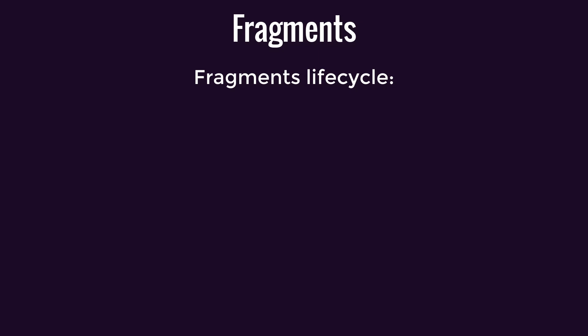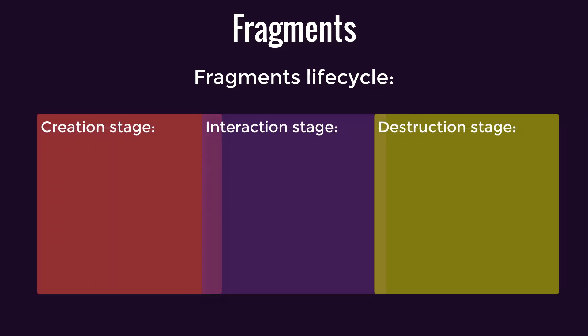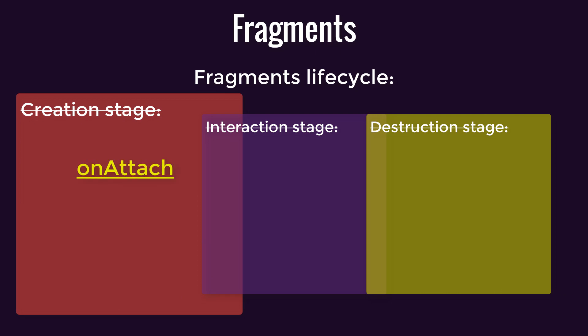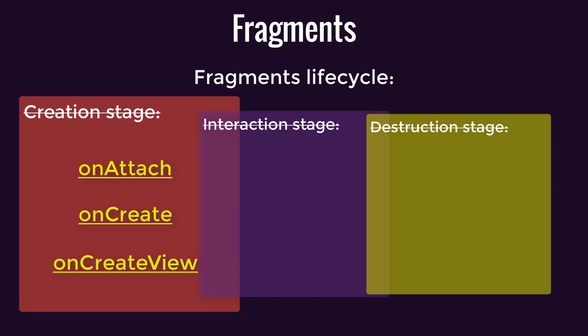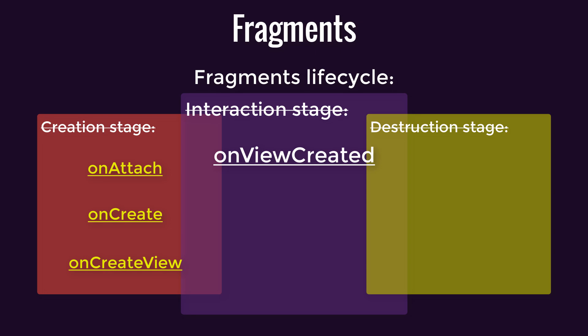Fragments also have their own lifecycle, similar to the activity lifecycle. They go through stages like creation, interaction, and destruction. In the creation stage, the onAttach callback is the first to be called when the fragment is associated with an activity — it provides access to the containing activity, enabling fragment-activity communication. Following this, the onCreate method is called for initial setup, typically for non-UI related tasks, so it's not advisable to touch any UI in onCreate within fragments. Another callback is onCreateView, where you create and inflate the fragment's layout, preparing it for display.